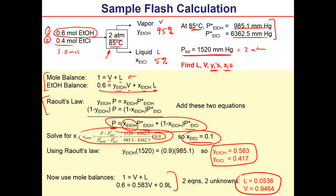In the vapor, we're more concentrated in ethanol, but we also fed that in at a greater fraction, so we slightly concentrated the second compound. In the liquid, the separation is more apparent — a lot of ethanol and very little ethyl chloride. So it wasn't very much liquid coming out, but it was more concentrated in the ethanol. That's our sample flash calculation.